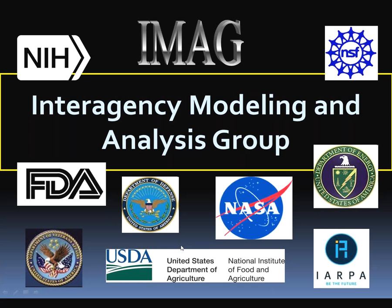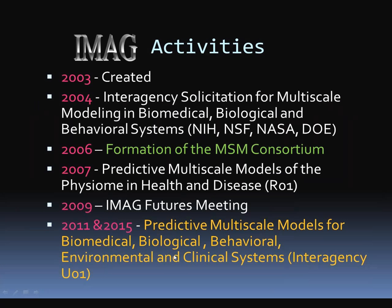All of us are program directors with an interest in promoting funding of computational models for biomedical, biological, and behavioral systems. IMAG was created in 2003, and our creation resulted in the publication of the very first interagency solicitation in 2004. The awardees from that solicitation then formed the Multiscale Modeling Consortium in 2006-2007. We then released another initiative for predictive models for health and disease, conducted the IMAG Futures meeting, and in 2015 reissued the current initiative for predictive multi-scale models.